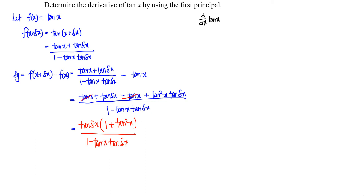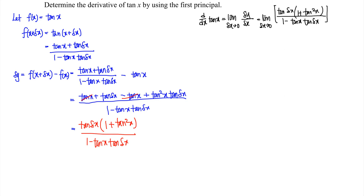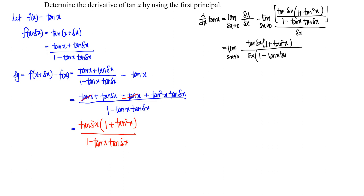Then next we apply the first principle. So the derivative of tangent x is equal to the limit as delta x approaches 0 of the small change in y over small change in x. This gives us tangent delta x times (1 plus tangent squared x), over delta x times (1 minus tangent x times tangent delta x).